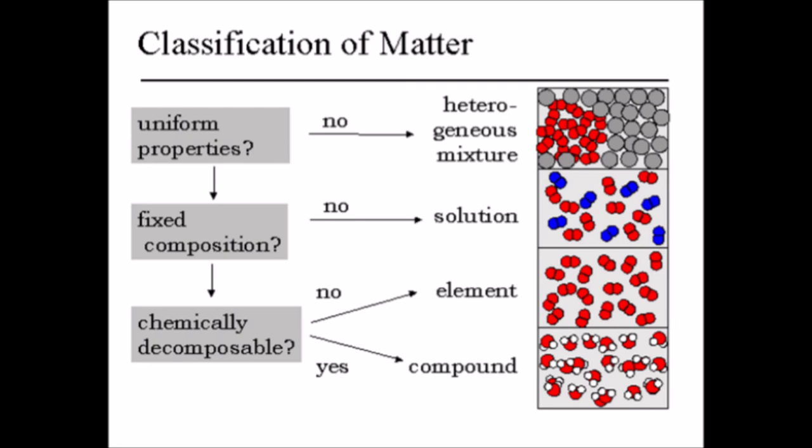The first question you can ask yourself if you find a sample of matter is, does that sample have uniform properties all the way throughout? Is it the same everywhere throughout that sample? If the answer is no, you're talking about a heterogeneous mixture, or a mixture that's going to have different properties in different parts of the mixture. If the answer is yes, you can then ask yourself, is there a fixed composition? Is that sample matter the same every time I find it? If your answer is no, then you're talking about a solution, or a homogenous mixture. It has uniform properties, but you can have different concentrations or different ratios of those compounds different times you find it.